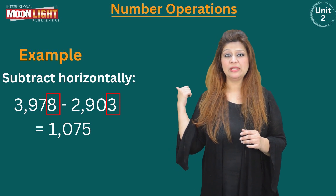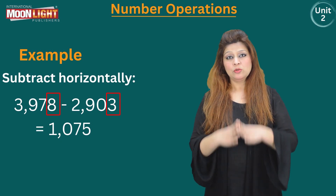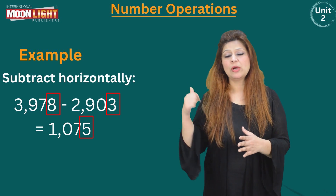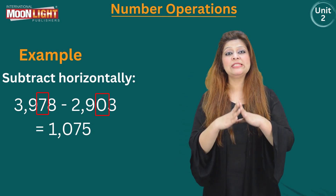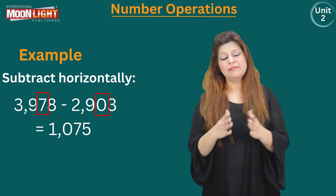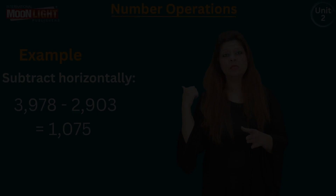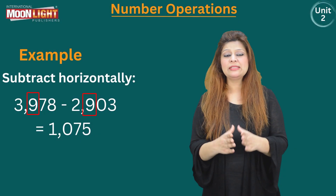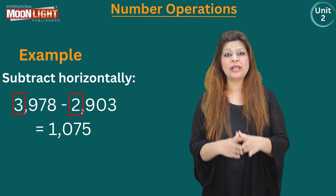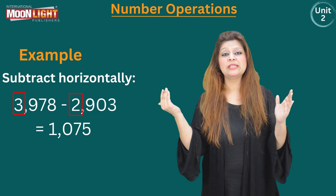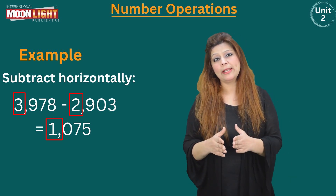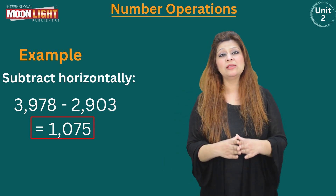8 is the first number and 3 is the second at the ones place — subtraction is possible. 8 minus 3 is 5, so I write 5 at the ones place. At the tens place, 7 minus 0 is 7. At the hundreds place, 9 minus 9 is 0. At the thousands place, 3 minus 2 is 1 — no borrowing needed. The final answer is 1,075.